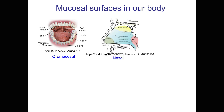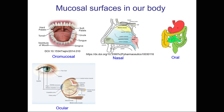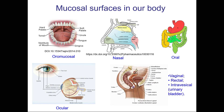Then nasal drug delivery, which is drug delivery via the nasal cavity. Then oral or gastrointestinal drug delivery where the drug is swallowed and travels through the gastrointestinal tract. Then ocular delivery and vaginal, rectal, and intravesical drug delivery. All of these are mucosal surfaces, and intravesical is drug delivery to the urinary bladder.